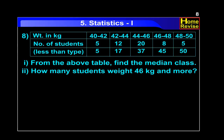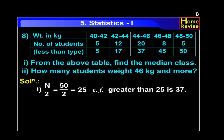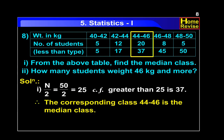Question number 8, part 1. From the above table, find the median class. N upon 2 equals 50 upon 2, that is 25. The cumulative frequency greater than 25 is 37. Therefore, the corresponding class 44 to 46 is the median class.